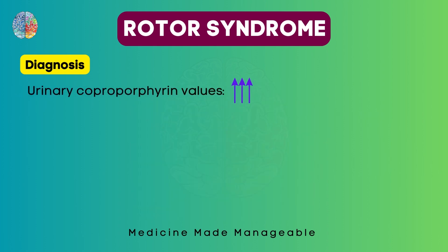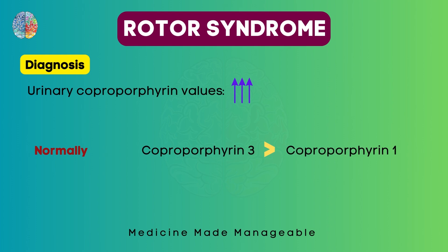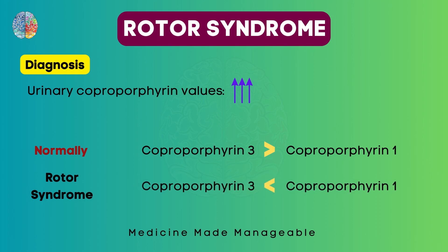We can also check urinary porphyrin values, which will be increased in Rotor syndrome. This is another differentiating factor from Dubin-Johnson syndrome where it is normal. Normally, coproporphyrin 3 is more than coproporphyrin 1, but in Rotor syndrome this ratio is actually reversed, so coproporphyrin 1 is more than coproporphyrin 3.